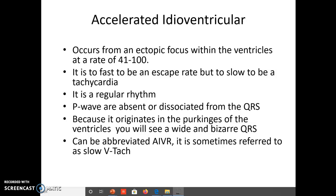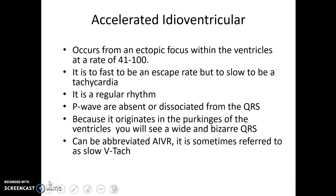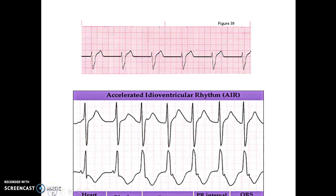We usually abbreviate it IVR, but sometimes you will hear people refer to it as slow V-tach. On this first example here, QRS to QRS to QRS is regular. If this is a six-second strip, I count six QRS complexes, giving a rate of 60. I have no P wave in front of it.